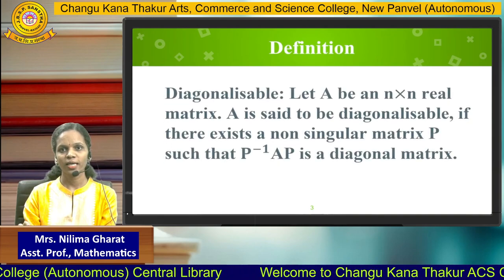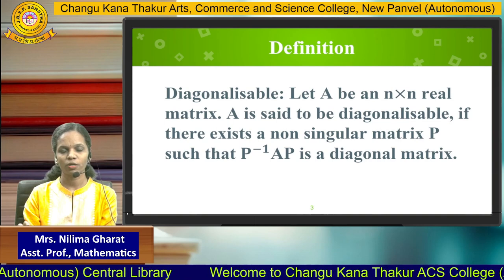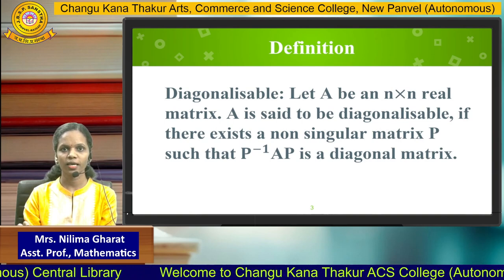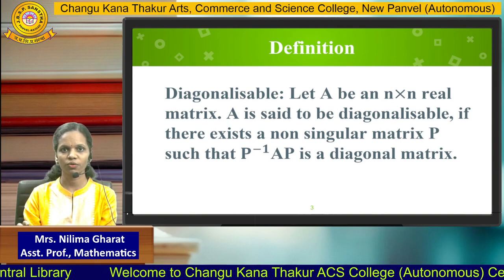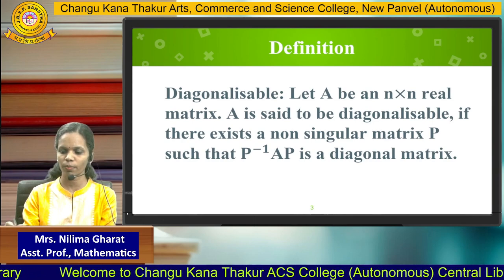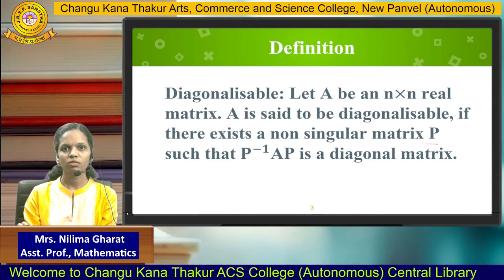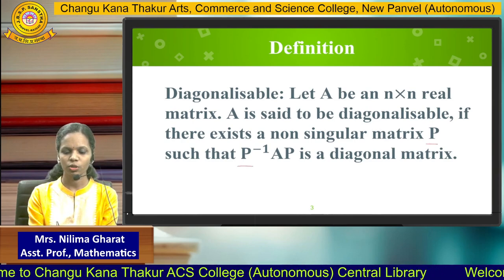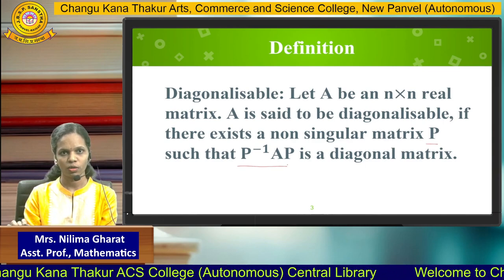If A is a real matrix of order N, then A is said to be Diagonalizable if there exists a non-singular matrix P such that P inverse into AP is a Diagonal Matrix.